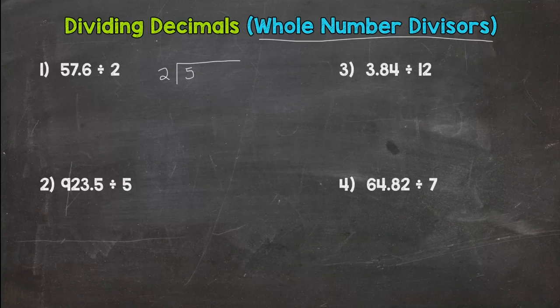And then our dividend is 57 and 6 tenths. So from now on, when you see a division problem, you need to ask yourself this question: Is my divisor whole? And your divisor is this outside number here. If it is a whole number, you bring your decimal straight up. Okay, that's where it will go in your answer. As simple as that.